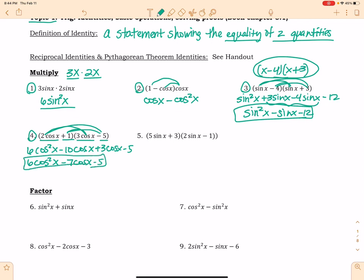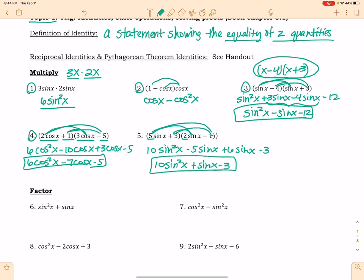And then I'm going to do the same thing on number 5. So I'm going to distribute this. So 5 and 2, that's 10 sine squared x. Negative 5 sine x, 6 sine x, and negative 3. Easy peasy lemon squeezy.